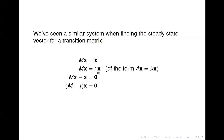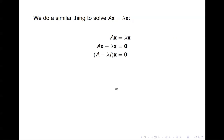We took the x over to the other side and factored it out, and ended up with M minus I times x equals 0 — that was the equation to solve to find the steady state vector. We're going to do a similar thing with our eigenvector system: bring the lambda x to the other side, factor out x, and we end up with A minus lambda times the identity matrix times x equals 0. This is more complicated than with the Markov chains, because we don't know what lambda is — we don't know x and we don't know lambda.